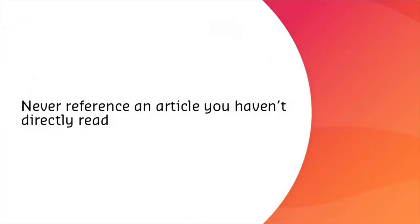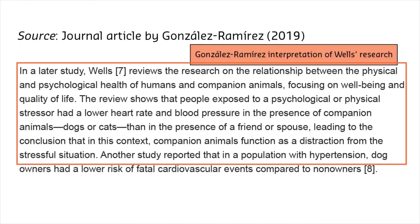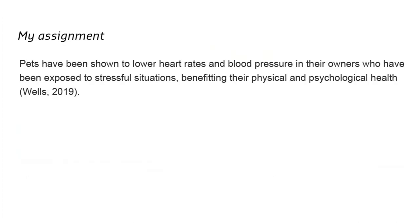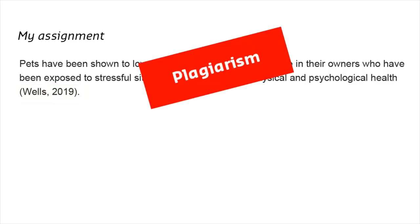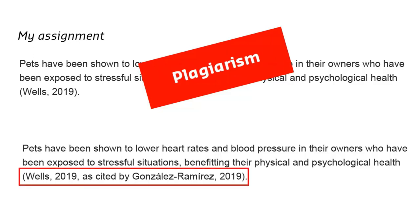Never reference an article you haven't directly read. If we read about Wells' study through González Ramírez's article, we're reading her interpretation of that research. If you include this interpretation in your assignment but reference Wells only, you're plagiarising the work of González Ramírez. If you can't access Wells' original article, you should use a secondary citation to acknowledge the work of González Ramírez in introducing you to the research.